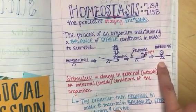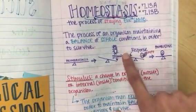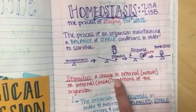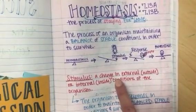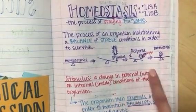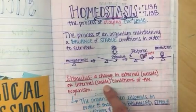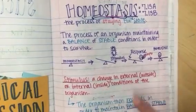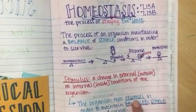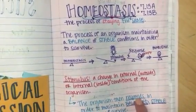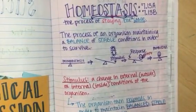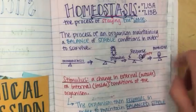A stimulus is anything that changes your condition — a change in external (meaning outside) or internal (meaning inside) conditions of the organism. Then the organism responds in order to maintain balanced, stable conditions and survive — in other words, to maintain homeostasis.